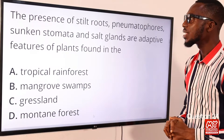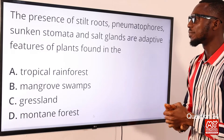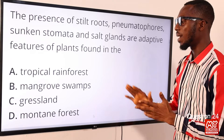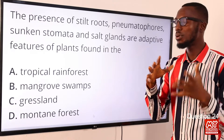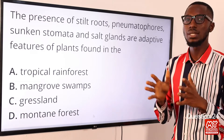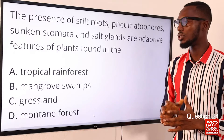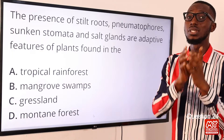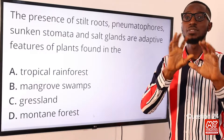Question 24. The presence of stilt roots, pneumatophores, sunken stomata and salt glands are adaptive features of plants found in the mangrove swamps. The mangrove swamp is actually a forest that has very small trees with broad leaves; they are evergreen. This habitat has challenges: it is a waterlogged setting where the oxygen content is very low, so pneumatophores are needed to take in atmospheric oxygen.